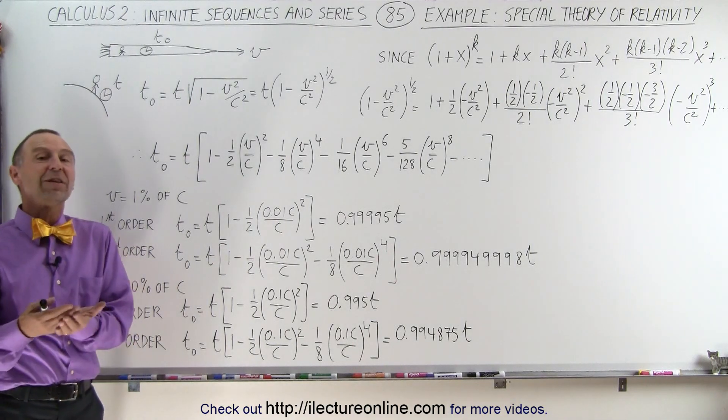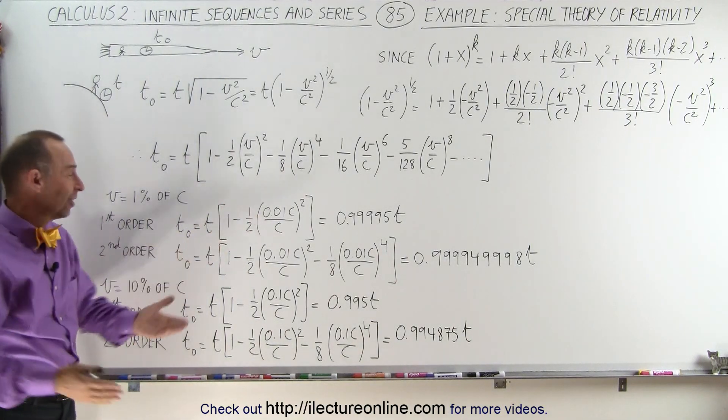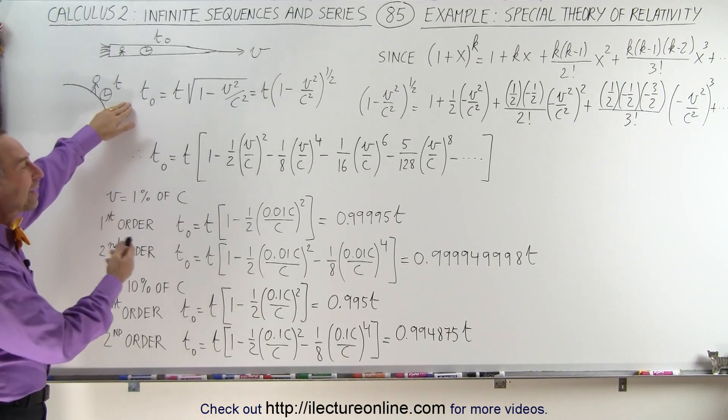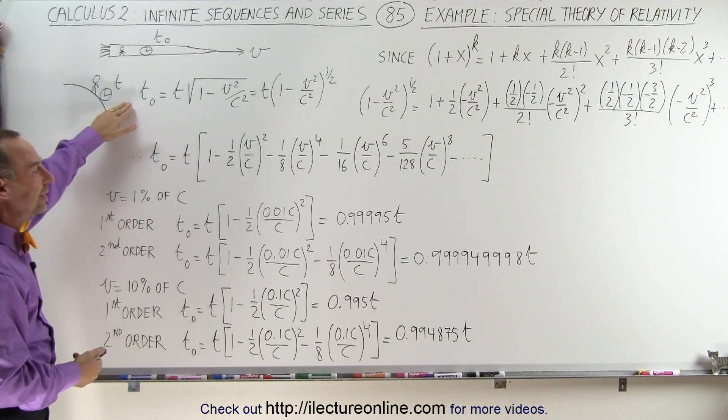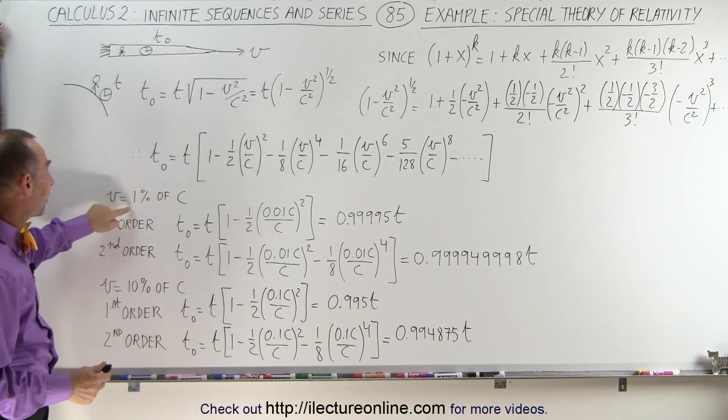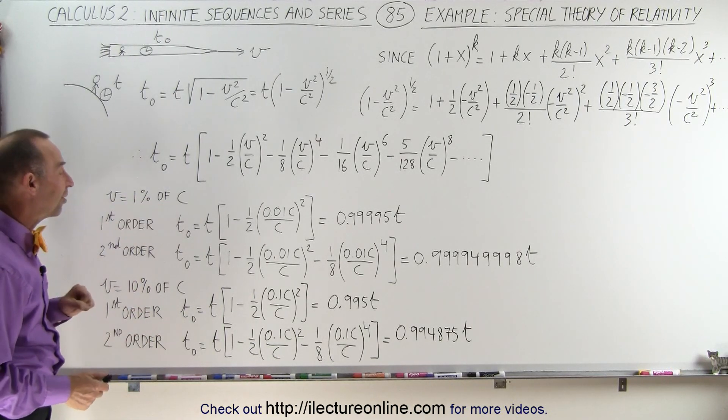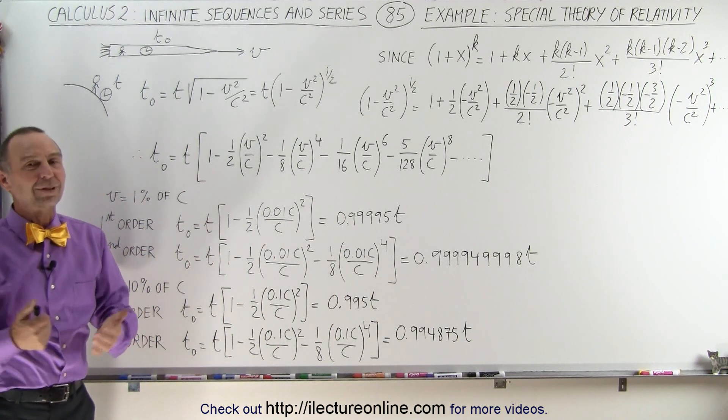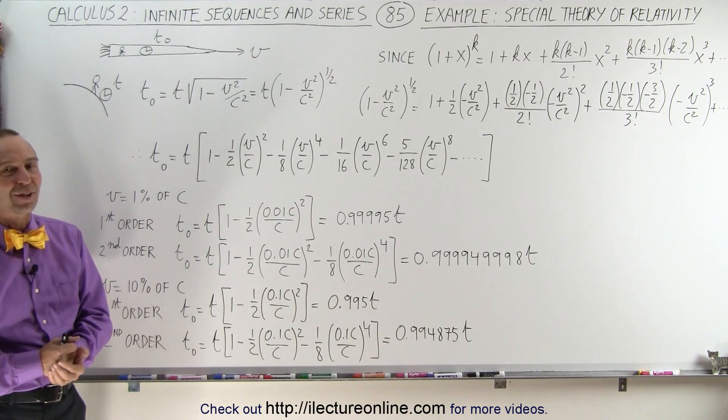But now we're talking about scientific calculations in space, not at all relative what we would call practical applications of this kind of technology when we're dealing with satellites. As I said, the velocities are typically much slower than one percent the speed of light, so we usually don't even have to go past the first order approximation in our calculations. And that's how it's done.